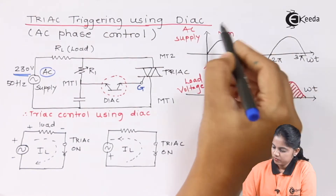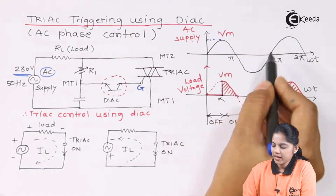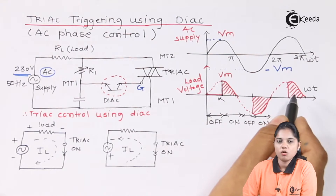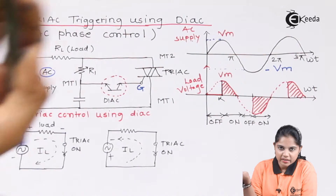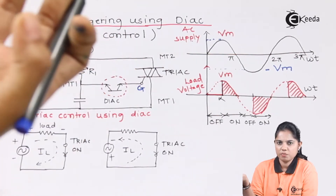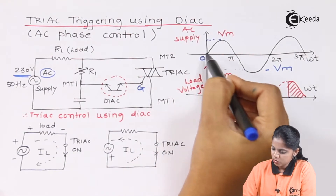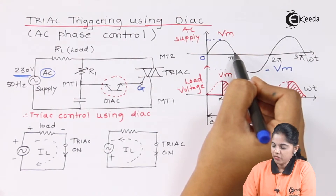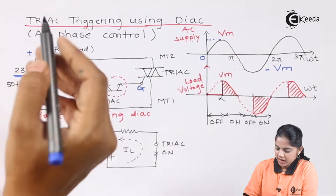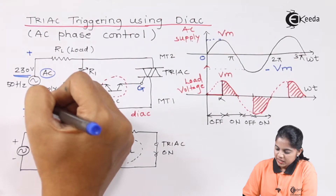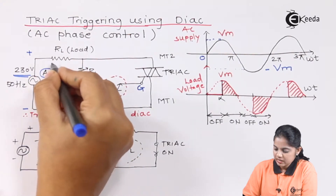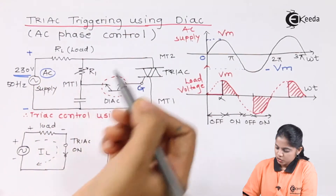The input waveform goes from 0 to π with voltage +Vm, and from π to 2π there is a negative cycle with voltage −Vm. We will first analyze with a resistive load RL. In the positive half cycle, from 0 to π, the positive terminal is connected at one end and negative at the other end, forming a closed loop through which current starts flowing through resistance RL and R1.